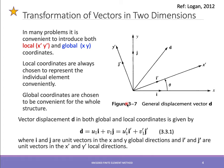First, we need to transform our vectors into a common axis. In 2D plane problems, it is convenient to introduce both a local and a global coordinate system. The local coordinate, denoted with a prime, is used for each individual bar element, and it is always chosen to represent that element conveniently.